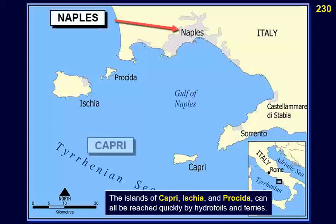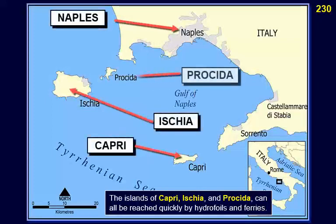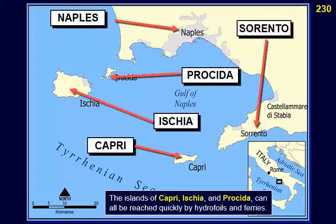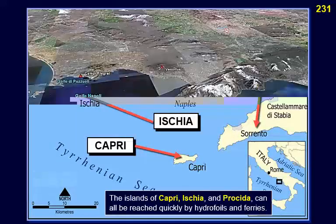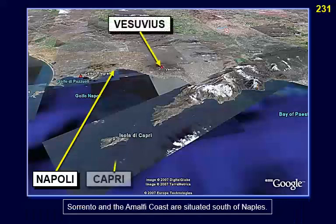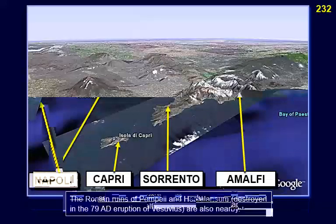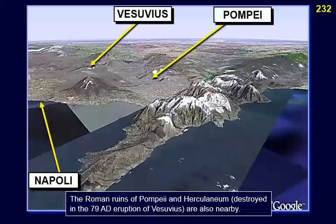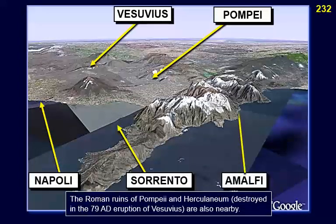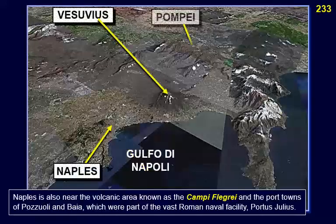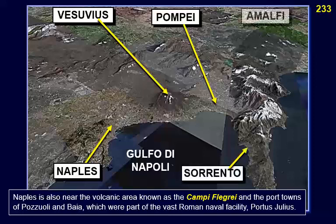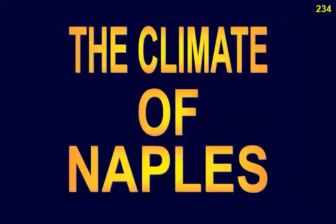The islands of Capri, Ischia, and Procida can all be reached quickly by hydrofoils and ferries. Sorrento and the Amalfi Coast are situated south of Naples. The Roman ruins of Pompeii and Herculaneum, destroyed in the 79 AD eruption of Vesuvius, are also nearby. Naples is also near the volcanic area known as the Campi Flegrei and the port towns of Pozzuoli and Baia, which were part of the vast Roman naval facility Portus Julius.